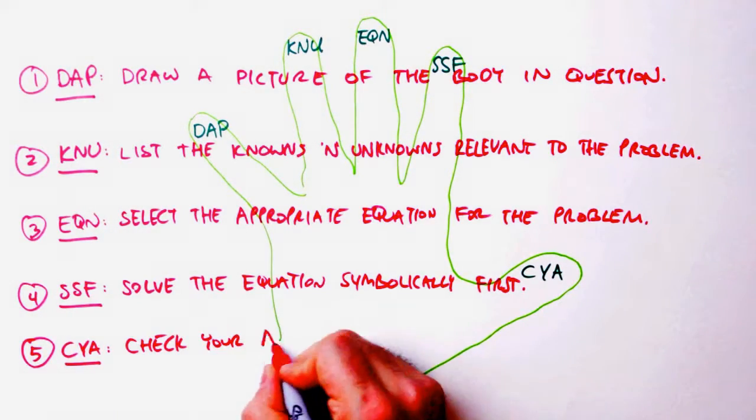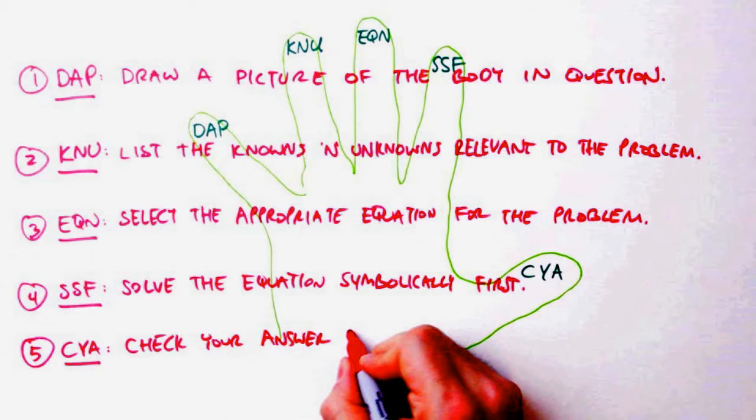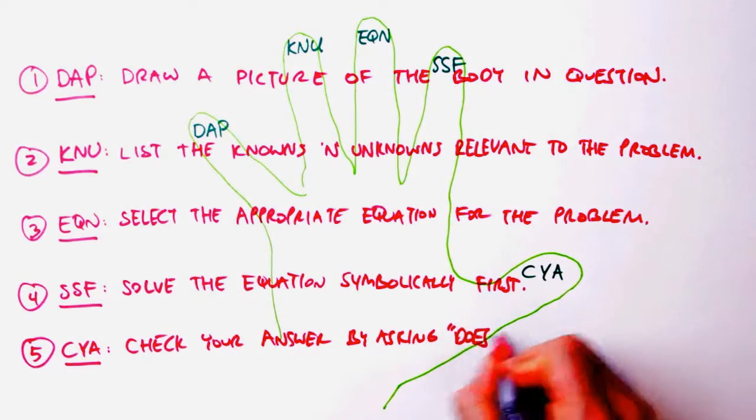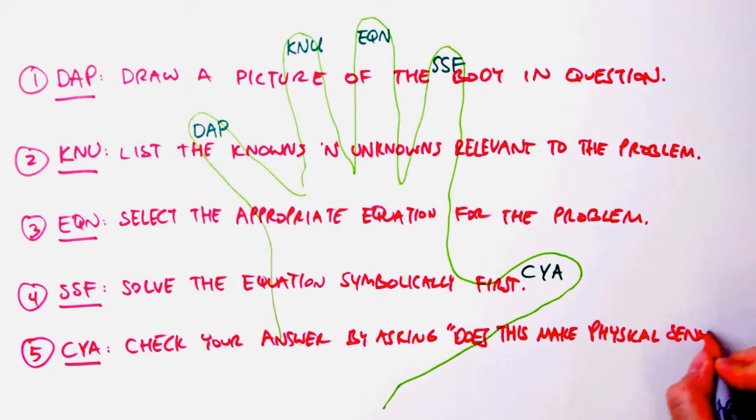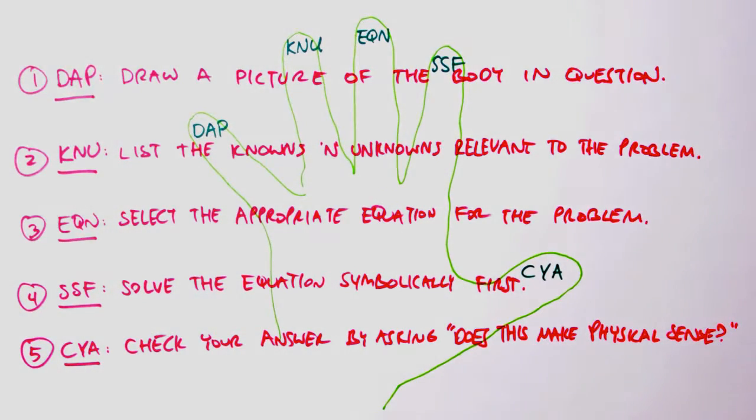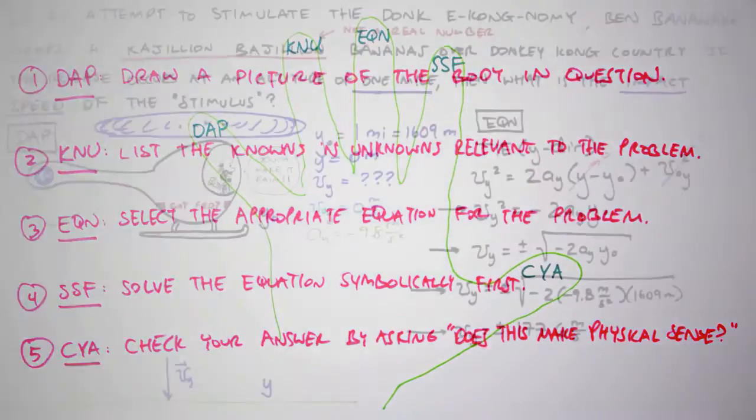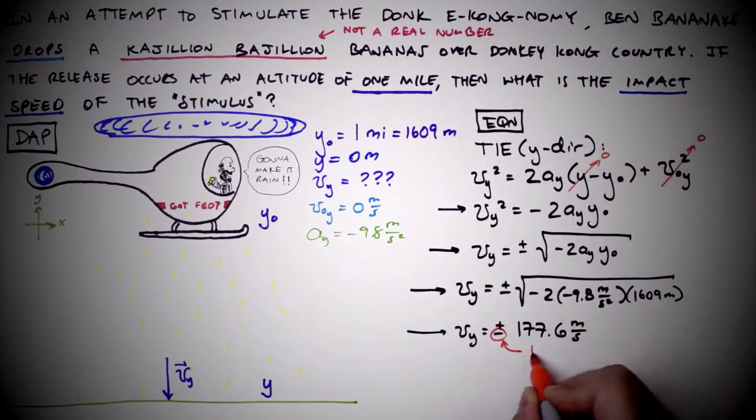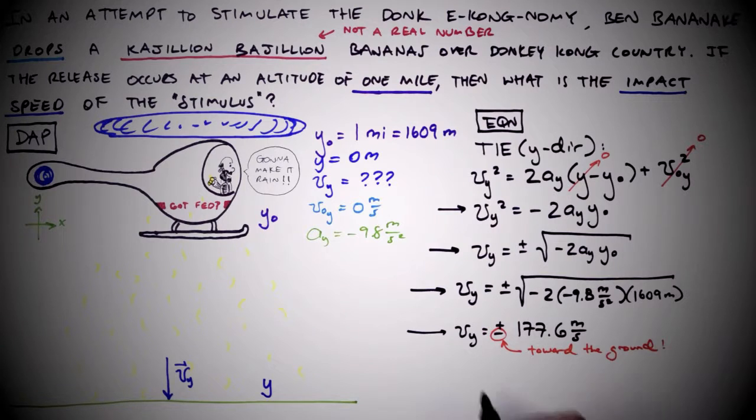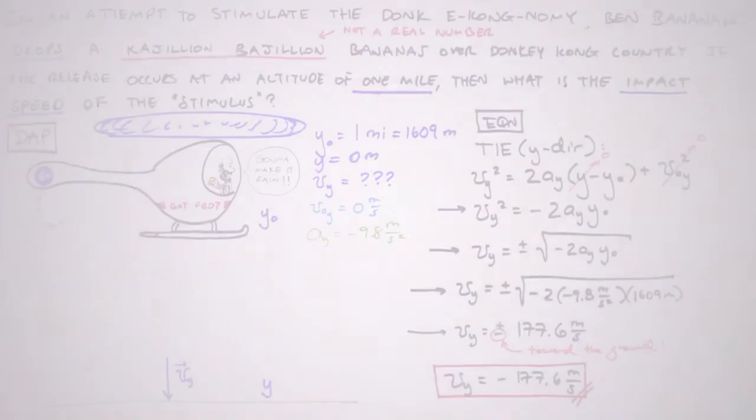Step 5. Check your answer. No, I don't mean by looking in the back of the book or googling for solutions. I mean by asking yourself, does this answer make physical sense? Are the units what we'd expect? Is the numerical value physically reasonable? If the answer is negative, does that make sense? Asking and answering these questions is just as important as any other step in the method and will put us on the path to a solid understanding of the material.